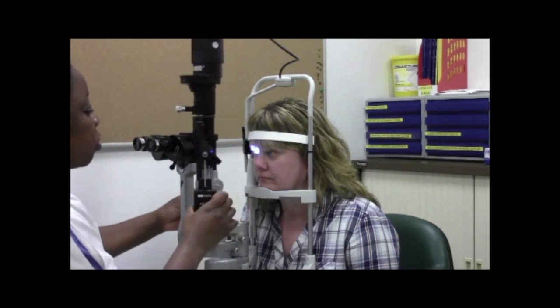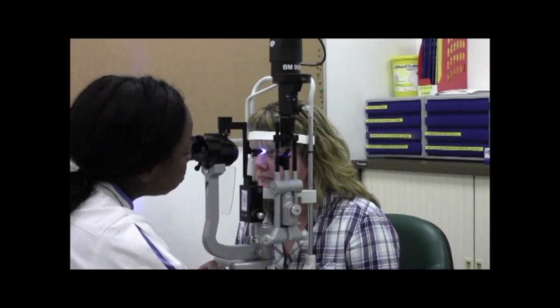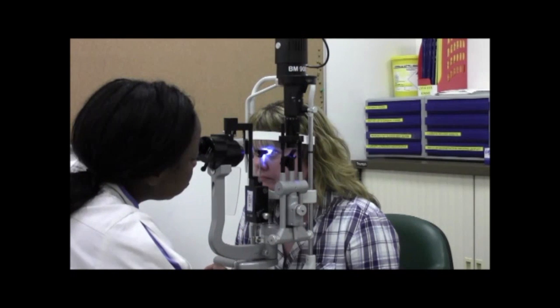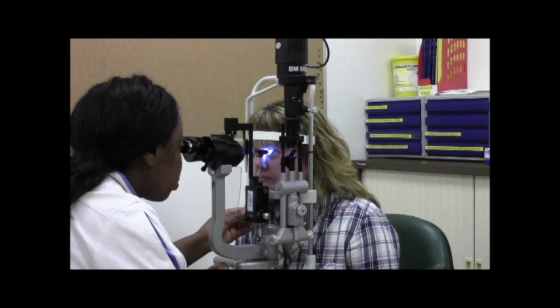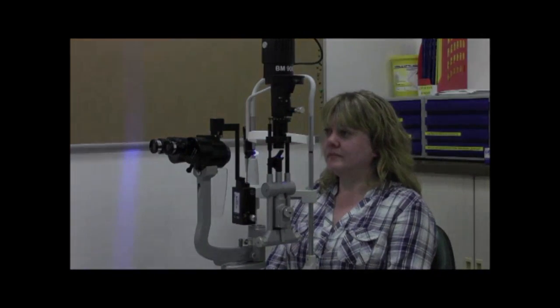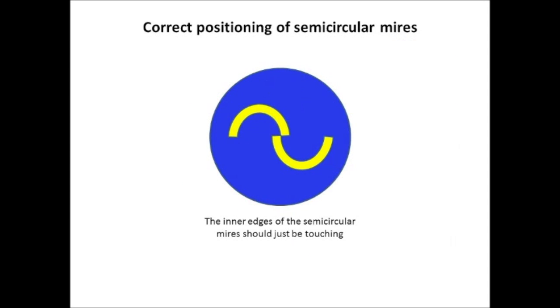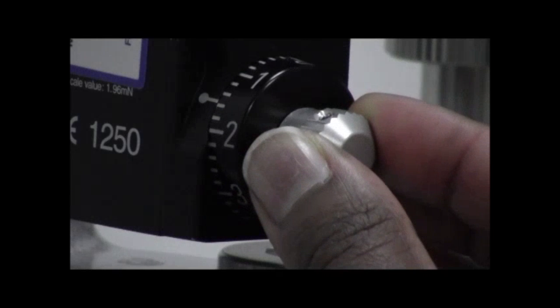Ask the patient to look straight ahead with their eyes wide open. Move the tonometer gently and slowly towards the patient's cornea until touching the central surface. If patients are having difficulty keeping their eyes open, you may assist by gently holding their lids. Avoid pressing on the patient's eyeball as this can give a falsely high IOP reading. Look through the eyepieces until the two fluorescent mires are visible. To ensure a correct reading, the mires should be of the precise width. Turn the measuring knob until the mires are just touching, and at this point you can record the IOP value.